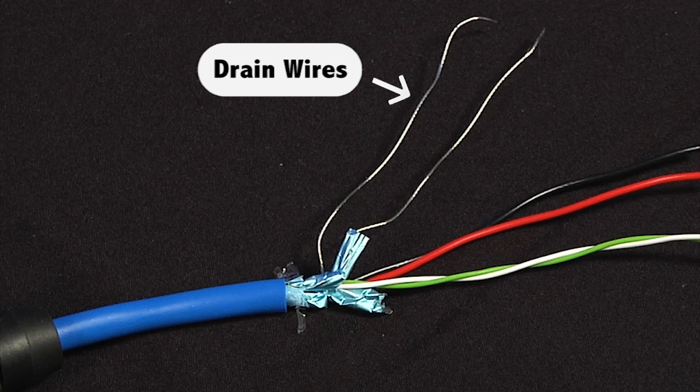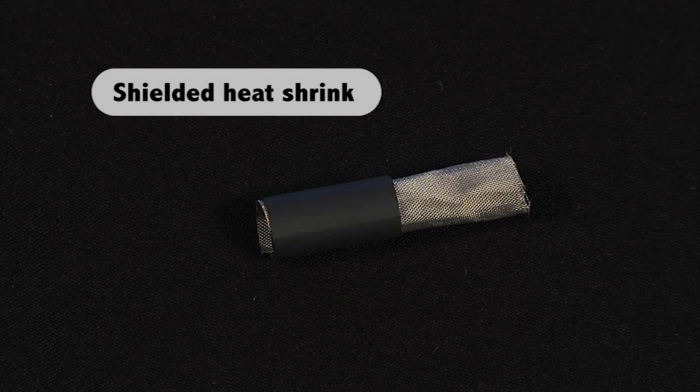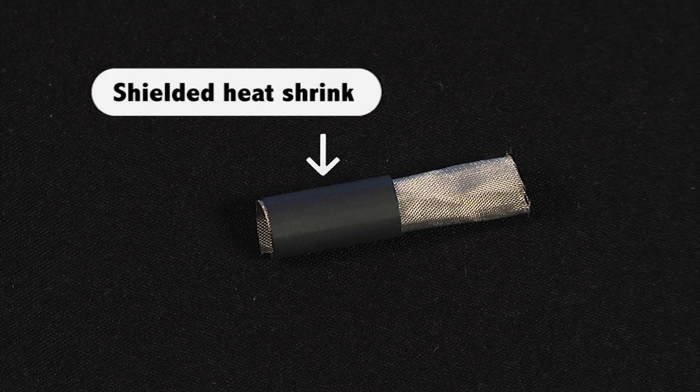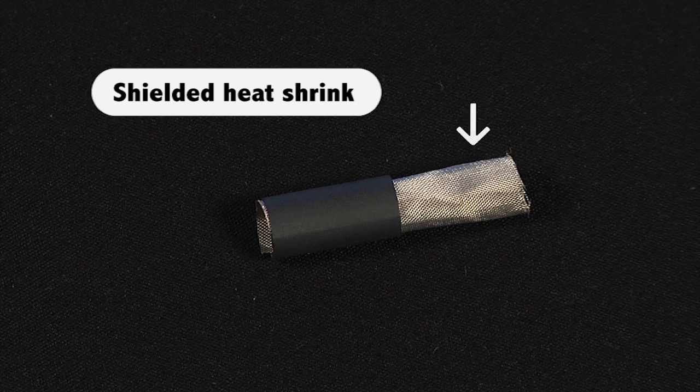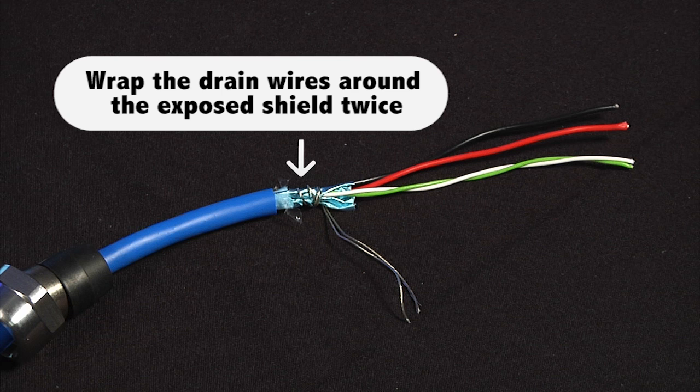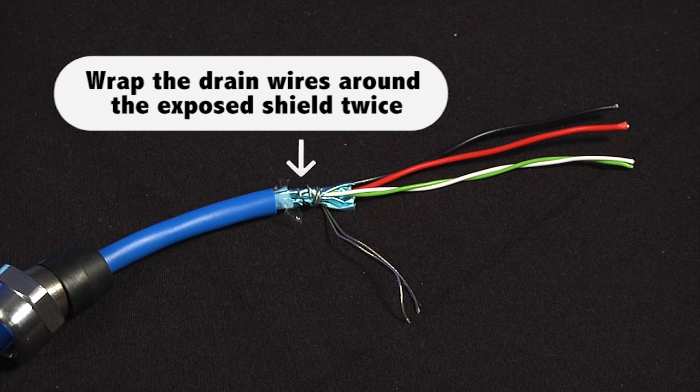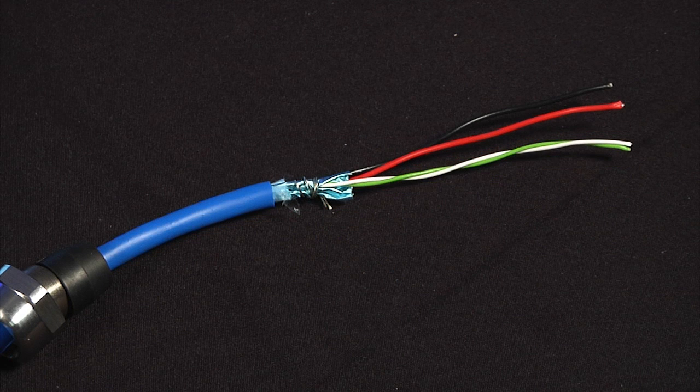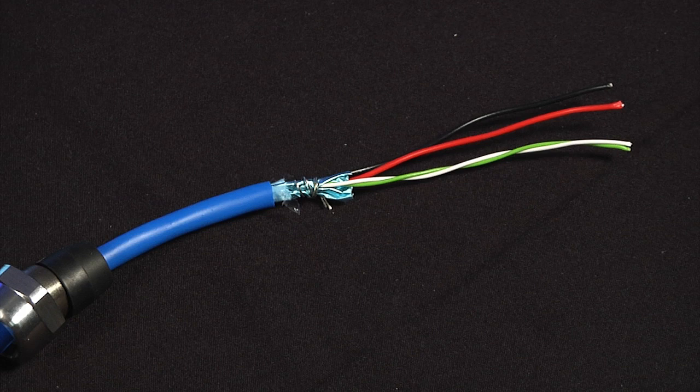With shielded cable, the next step is to apply a short piece of shielded heat shrink in order to make sure the drain wires are properly terminated inside the gland. Shielded heat shrink has about an inch of heat shrink tubing on one side and an inch of exposed shield on the other. Before attaching the heat shrink, wrap the drain wires around the exposed shield twice. Cut off any excess length of wire once you do this.